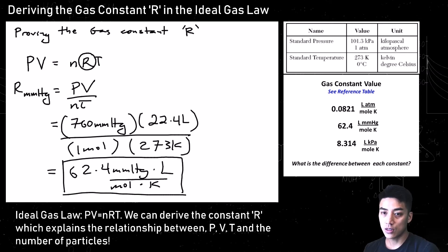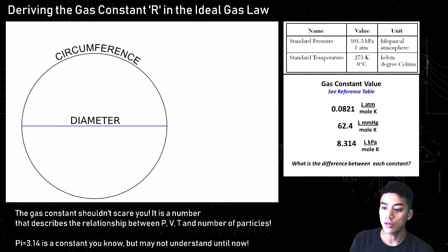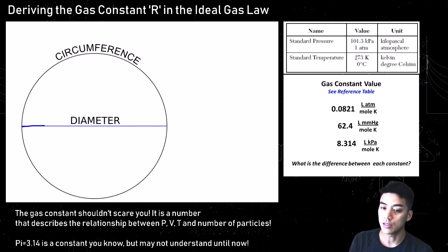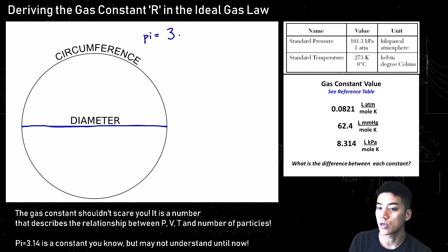So we just proved the three gas constants and their different units of pressure. I want to show you that you shouldn't be afraid of the gas constant R. It's just a number that describes the relationship between pressure, volume, temperature, and the number of particles.